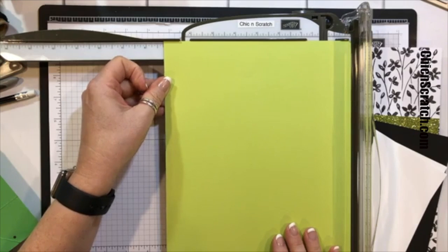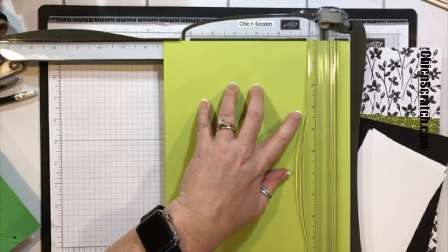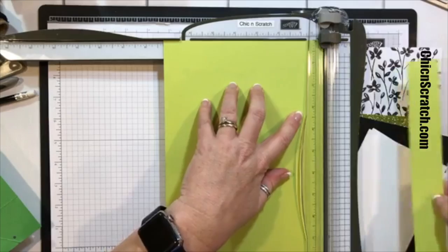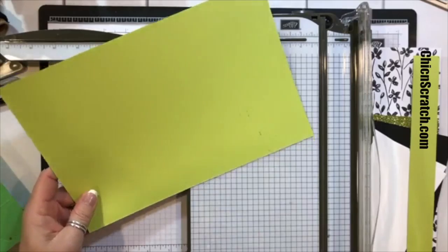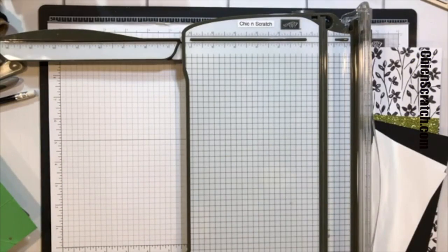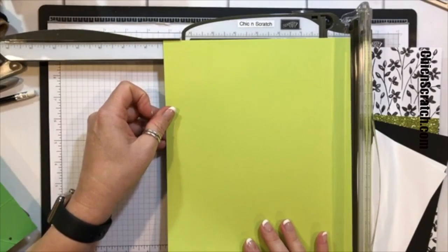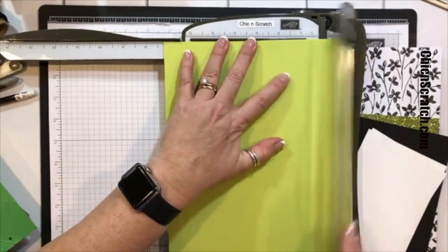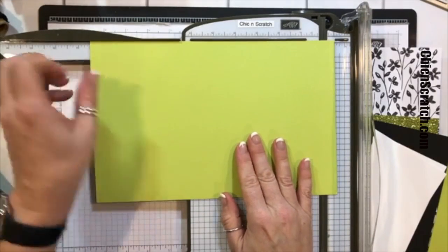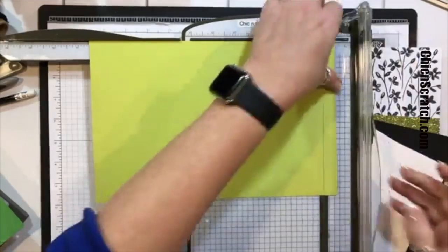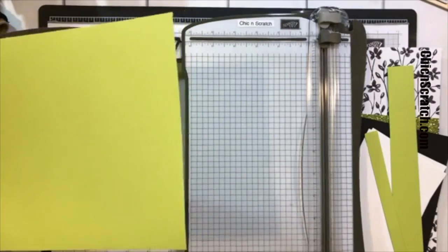If this is your first time, let us know in the chat box. We need to cut this down to measure 10 and a half by 7 and a quarter. So I'm going to cut it to measure 7 and a quarter first, then 10 and a half.